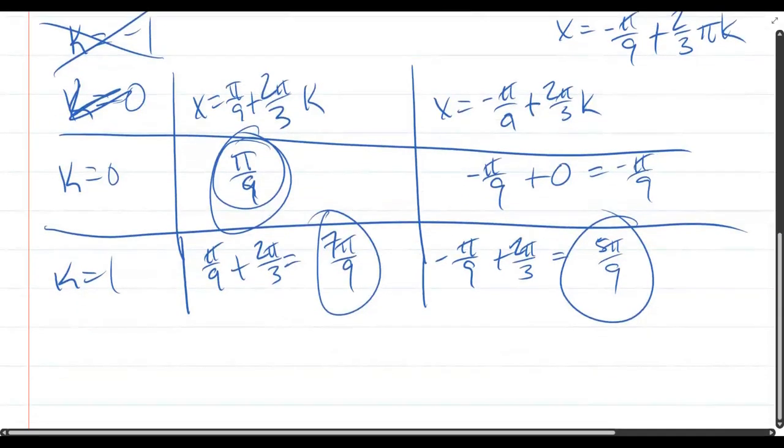All of those are between 0 and pi, so they fit into the interval. There's 3 of them. If we did k equals 2, our next values would be even larger and would exceed the bound pi. So these will be the 3 solutions.